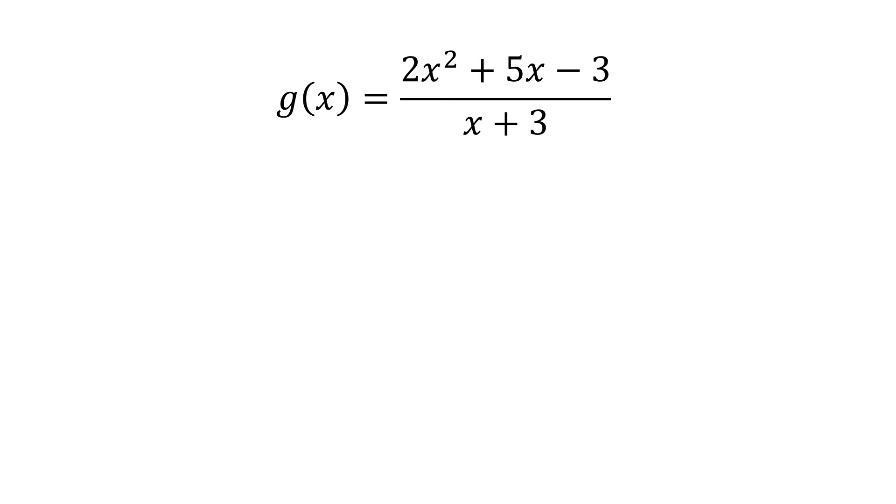Okay, next example. We have g(x) = (2x² + 5x - 3)/(x + 3). Now, recall that the first step is to reduce the rational function into lowest term. Now, look at the numerator. It's still factorable. So, we still have to factor it before we proceed to step 2.